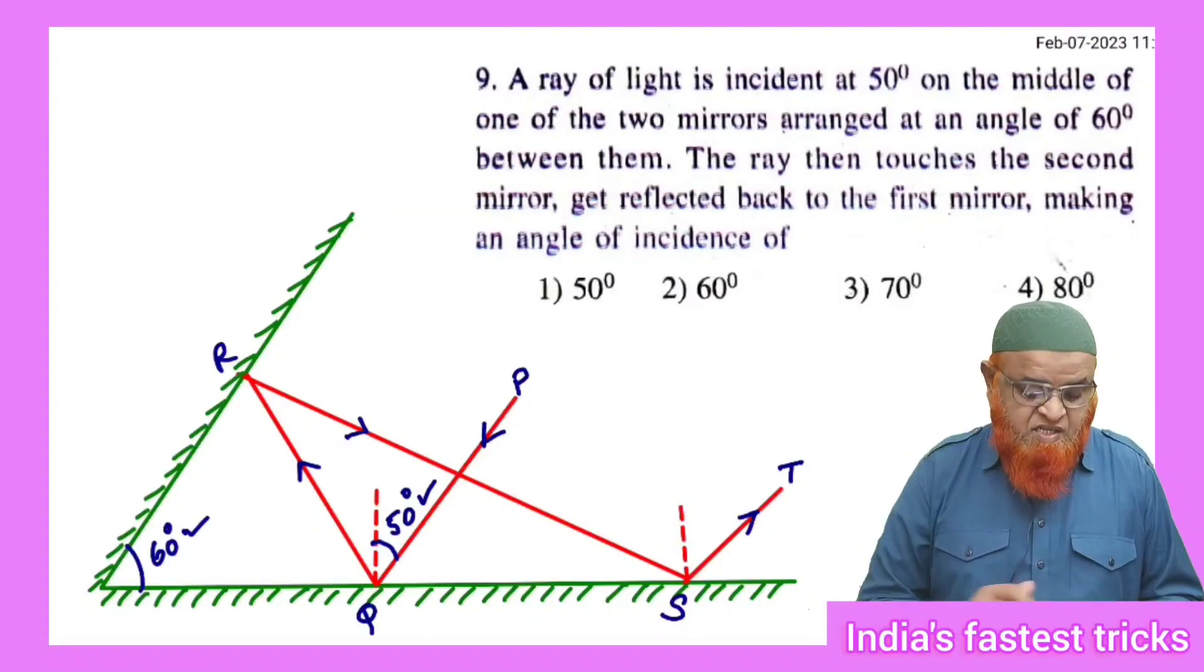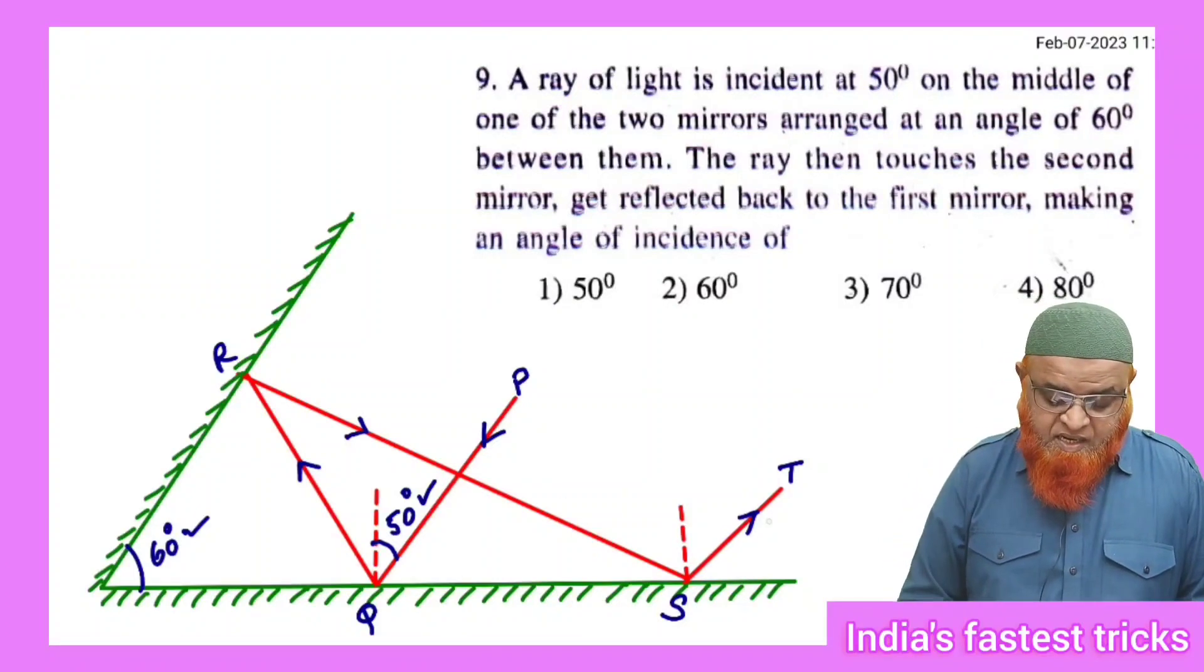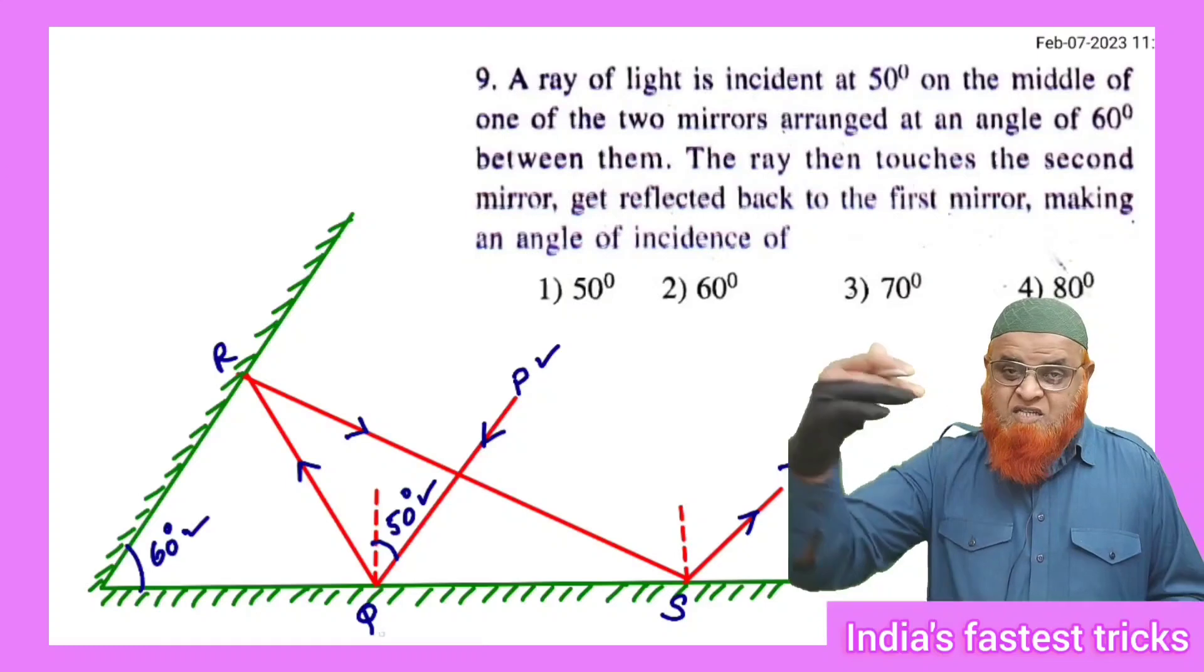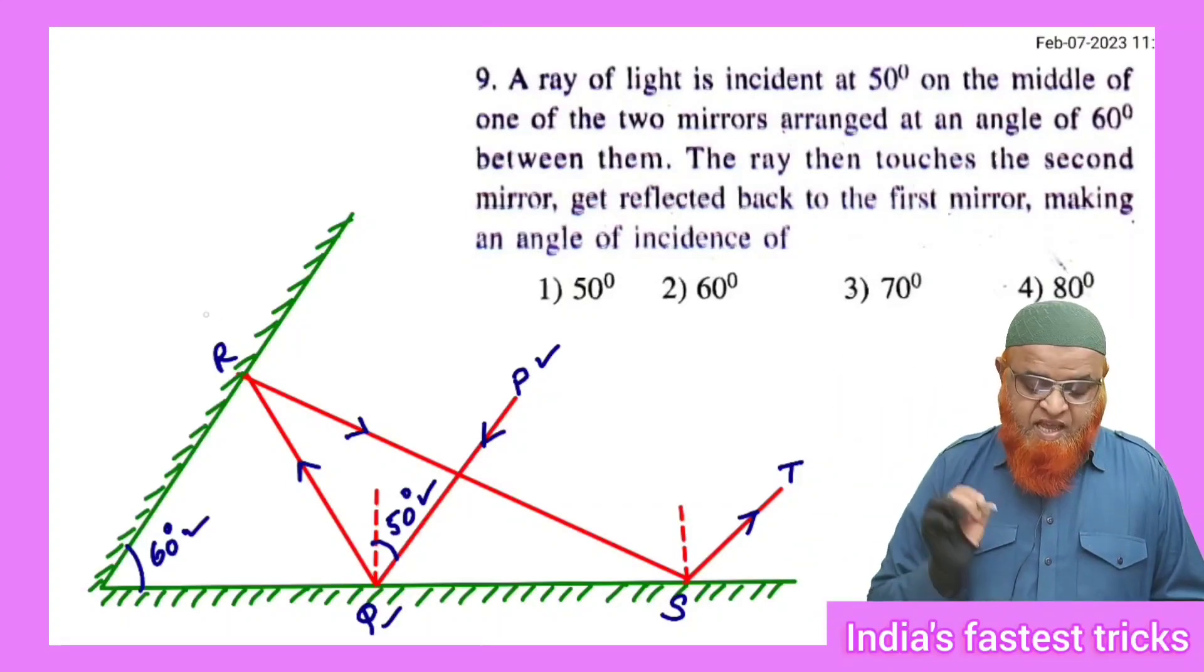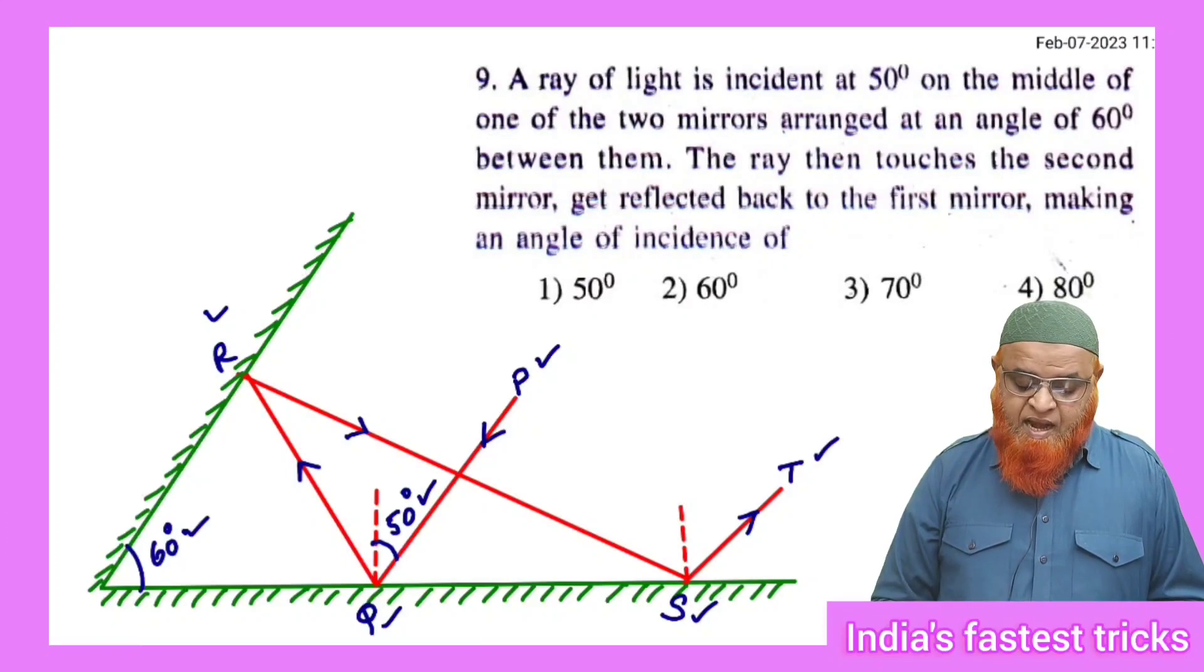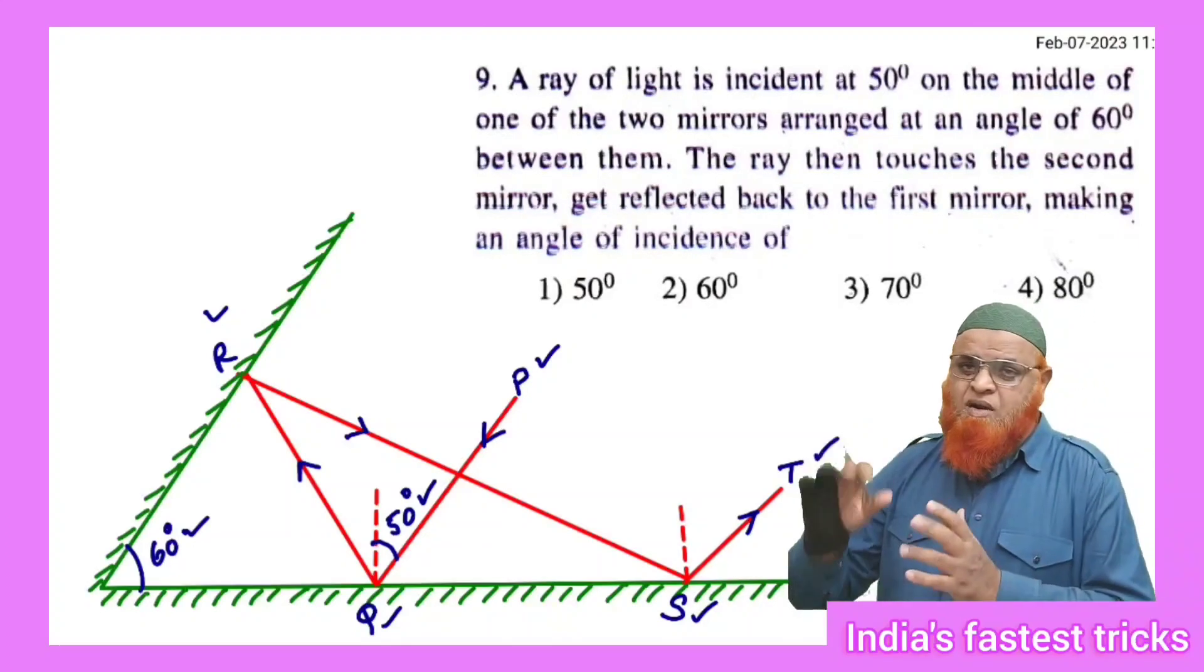The angle between the two mirrors is 60 degrees, and after that it will take multiple reflections. It starts from P and strikes at Q, again strikes on the second mirror at R, again at S, and emerges out at T.